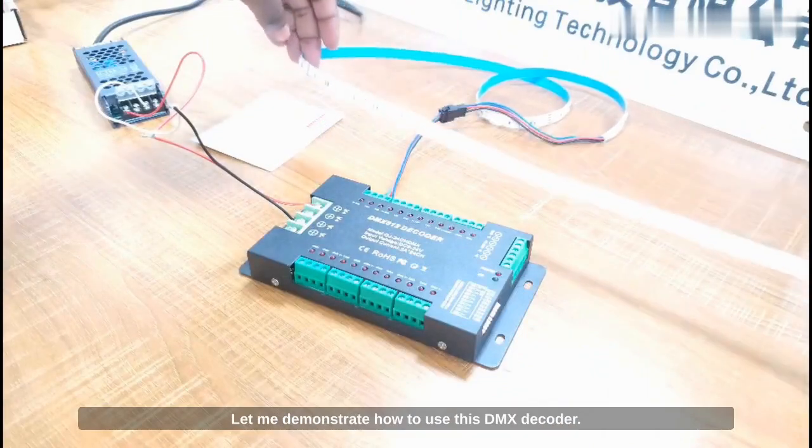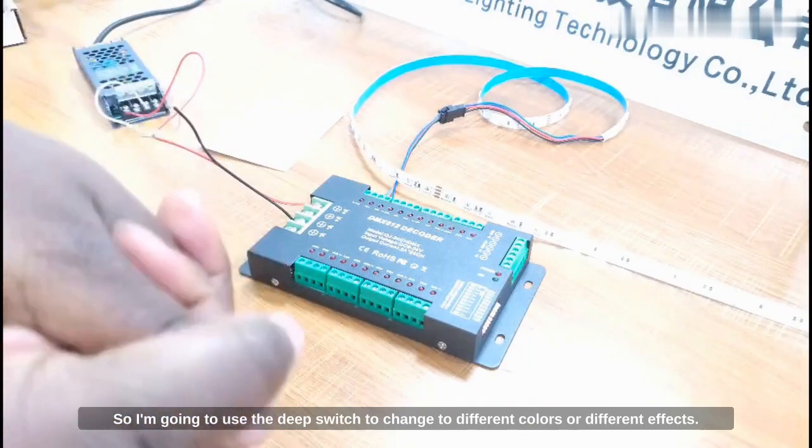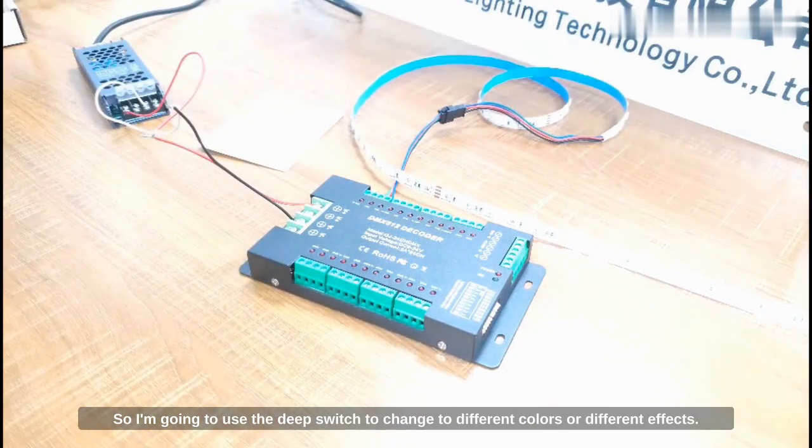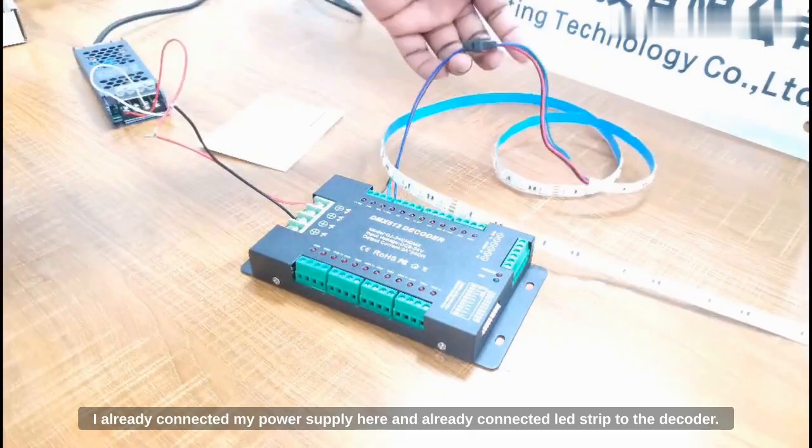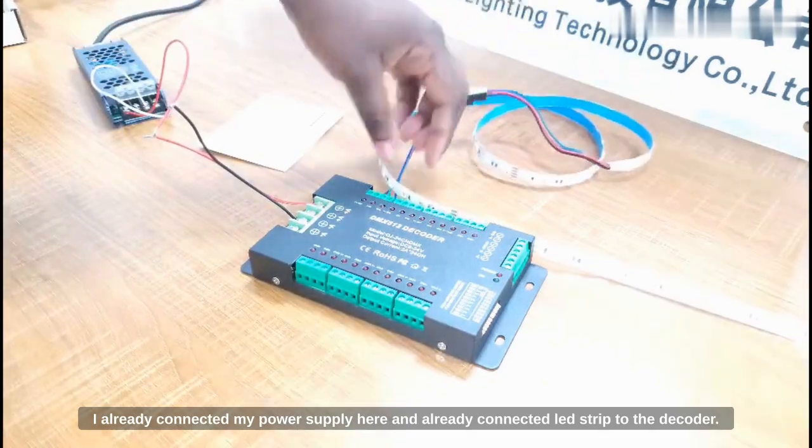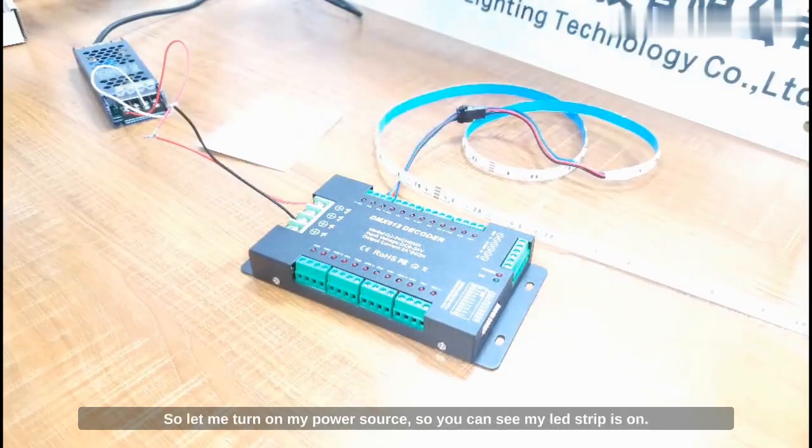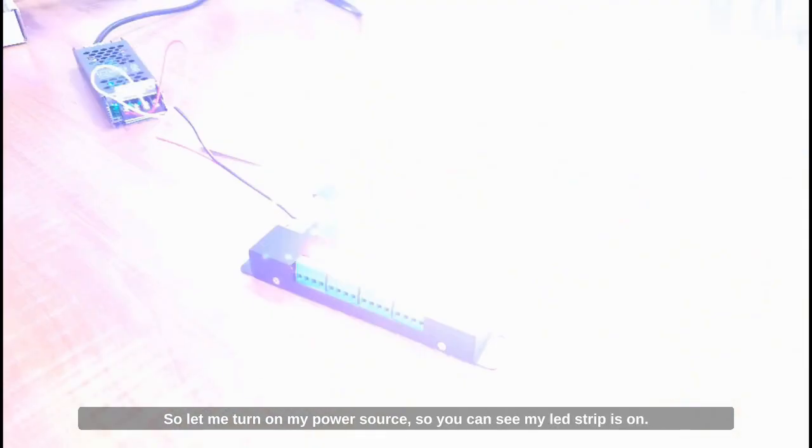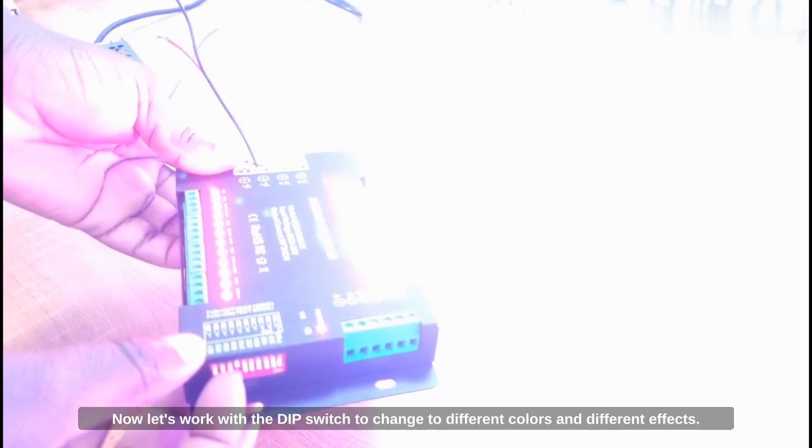Let me demonstrate how to use this DMX decoder. So I'm going to use the DIP switch to change to different colors or different effects. I already connected my power supply here and already connected my LED strip to the decoder. I'm going to use this SPI LED strip. So let me turn on my power source.